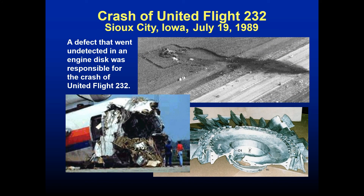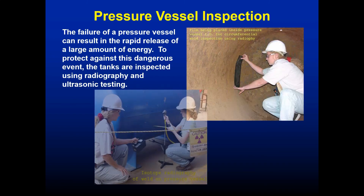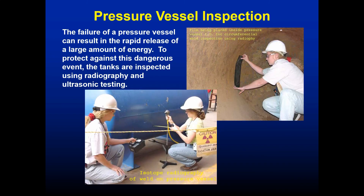This is why we do this: United Flight 232 in 1989 crashed because a tiny defect in an engine disc caused it to explosively disintegrate, throwing debris into the wings and fuselage, causing the aircraft to break apart. Pressure vessels are mostly inspected using X-ray and ultrasound, looking for wall thinning or damage in welds that could cause explosive decompression.